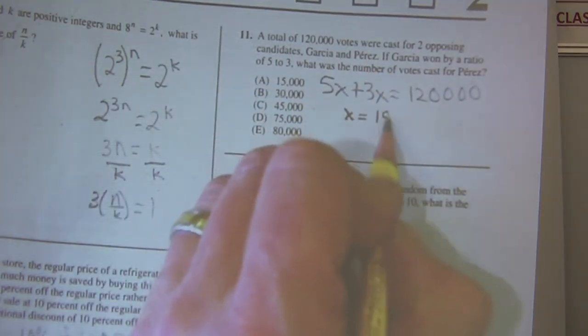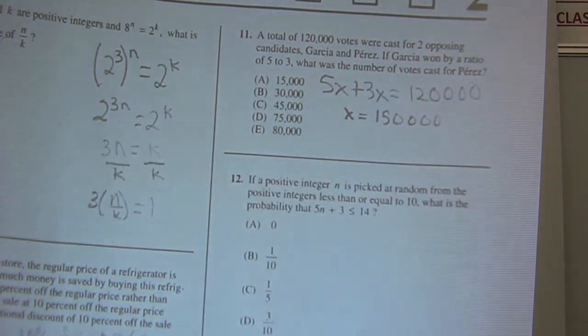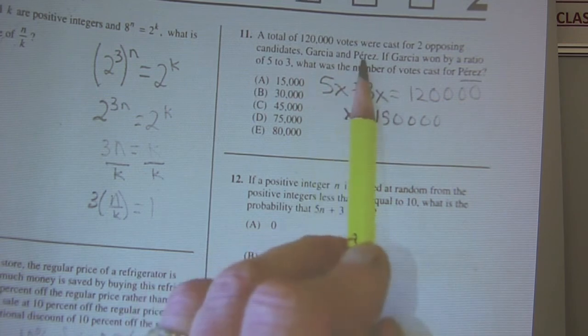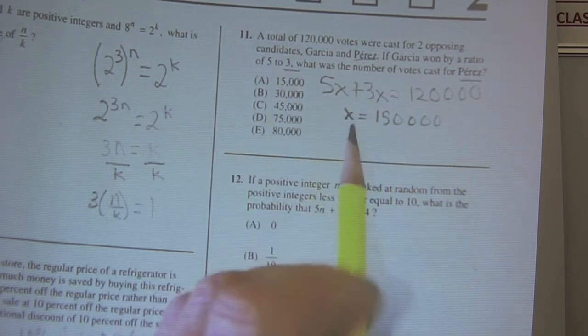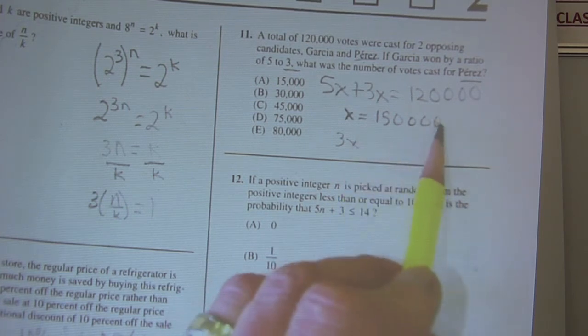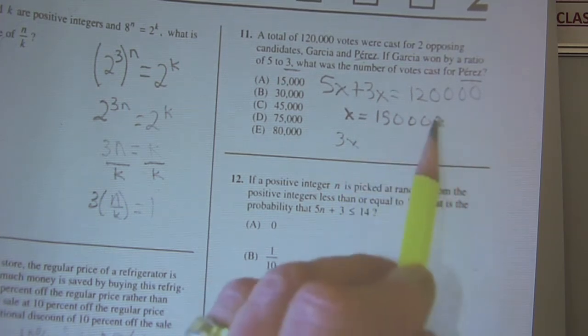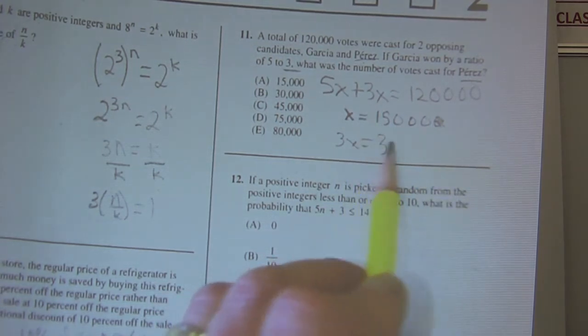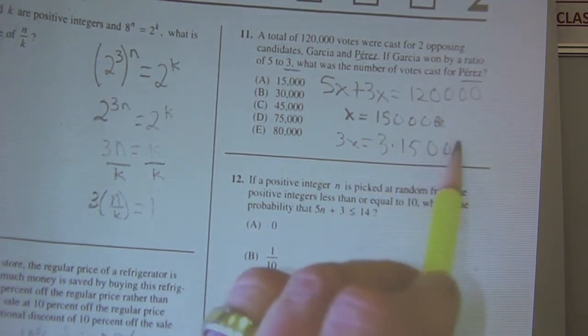And when I solve for x, you guys, I get 150,000. Okay, and it says for Perez, Perez was the second guy, so he's the 3x, so I've got to multiply that by 3. Not 150,000, sorry, 15,000. So I go 3 times 15,000 and I get choice C.